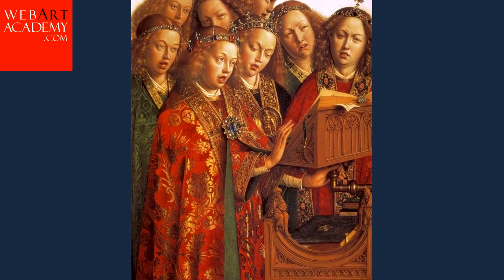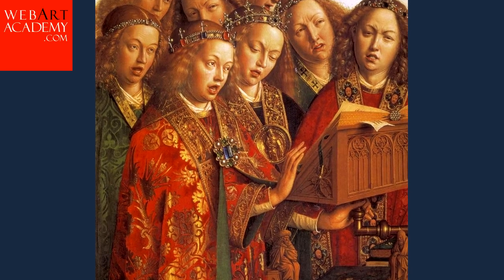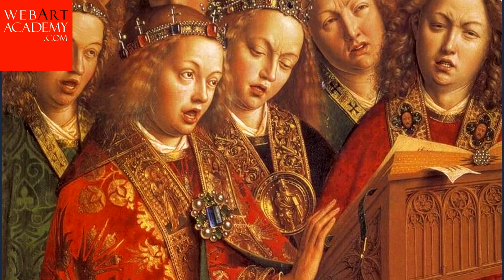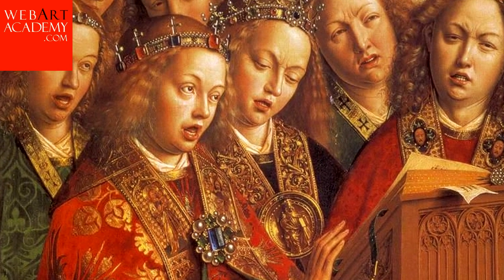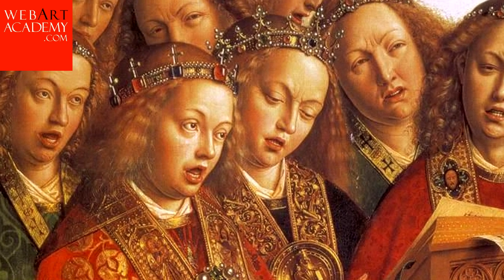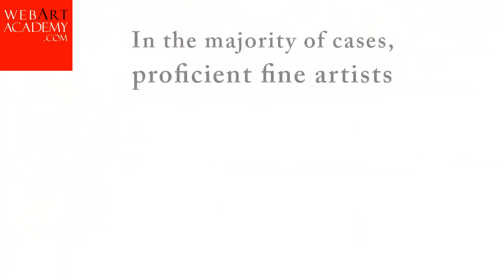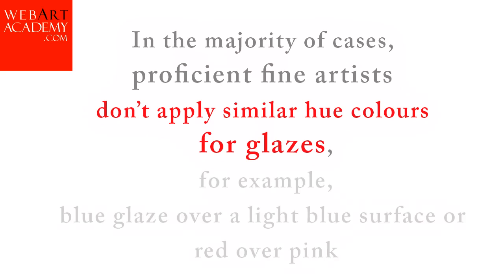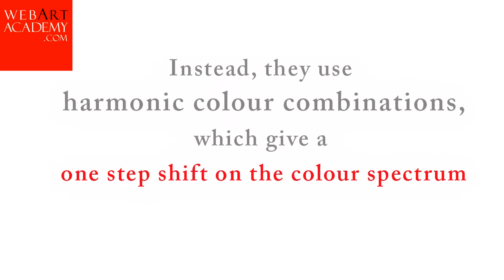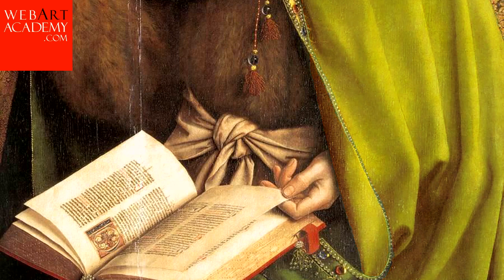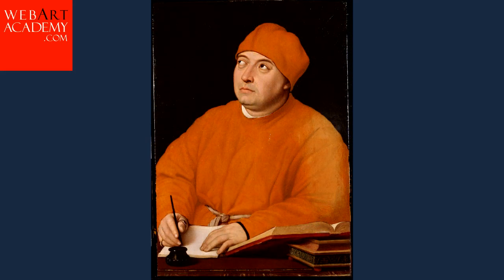As the painting surface becomes darker with glazes, some artists paint highlights with light oil paint over the glaze while it is still wet. Applying lighter brush strokes over the glaze gives a soft edge. If highlights are too bright, the artist can use glazing on top again when the paint is dry. Any excess glaze can be taken off with the fingers or hand. Proficient fine artists don't apply similar hue colors for glazes — for example blue glaze over light blue, or red over pink. Instead, they use harmonic color combinations giving a one-step shift on the color spectrum: blue over green, green over yellow, yellow over orange, and so on.